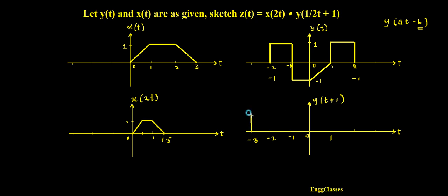Let me sketch y(t+1) now. The shape of the signal remains the same — there is no change in the shape. The only thing is it gets shifted along the time axis to the left. This is the shape of the new signal, which we call y(t+1).